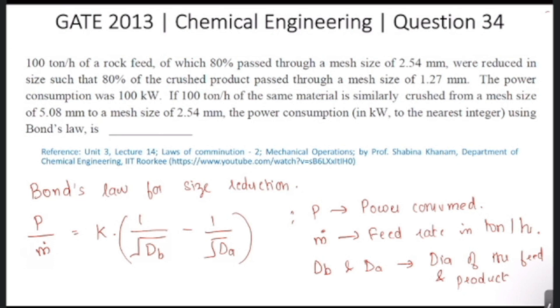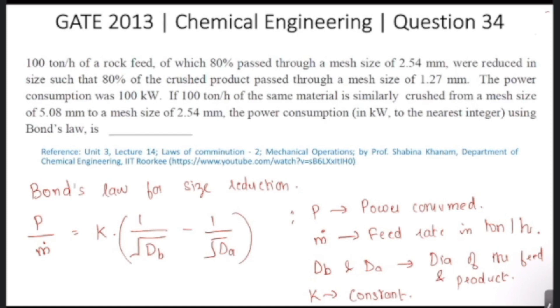K is the constant, the Bond's law constant. So let us write down all the data that they have given in this question. In the first part of the question, they have given the sizes 2.54 millimeter was reduced to a size of 1.27 millimeter.